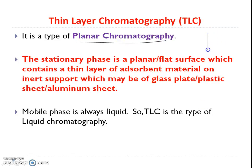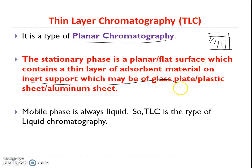The stationary phase is a planar or flat surface which contains a thin layer of adsorbent material or inert support, which may be of glass, plastic, or aluminum sheet. The mobile phase is always liquid, and the stationary phase is a solid adsorbent layer. Therefore, TLC is an example of liquid chromatography.